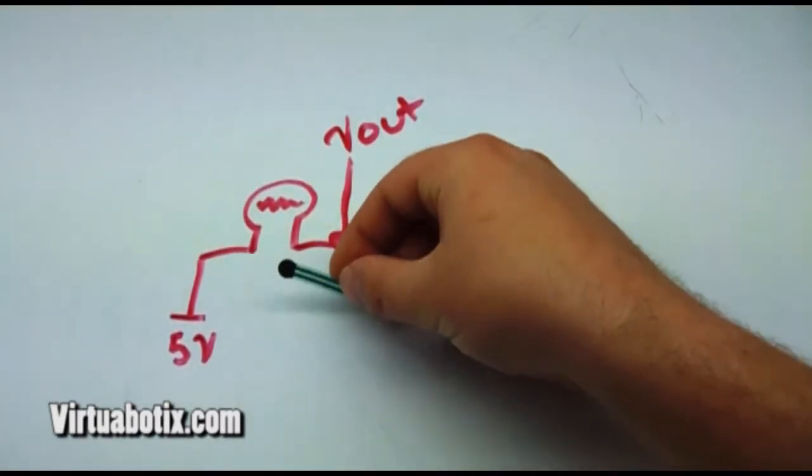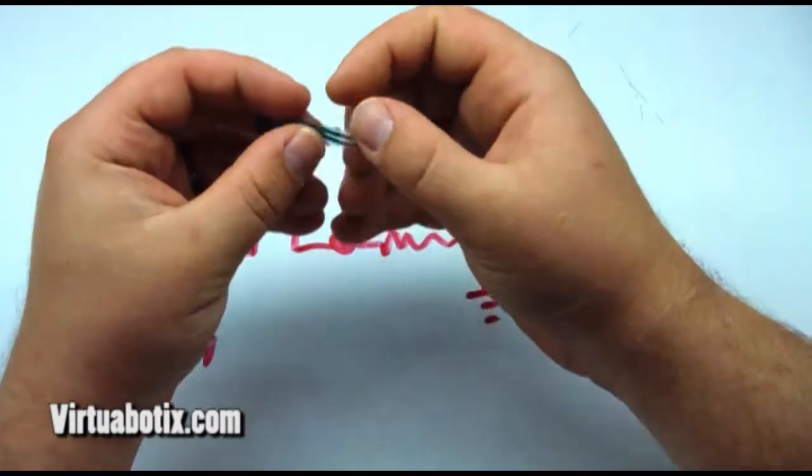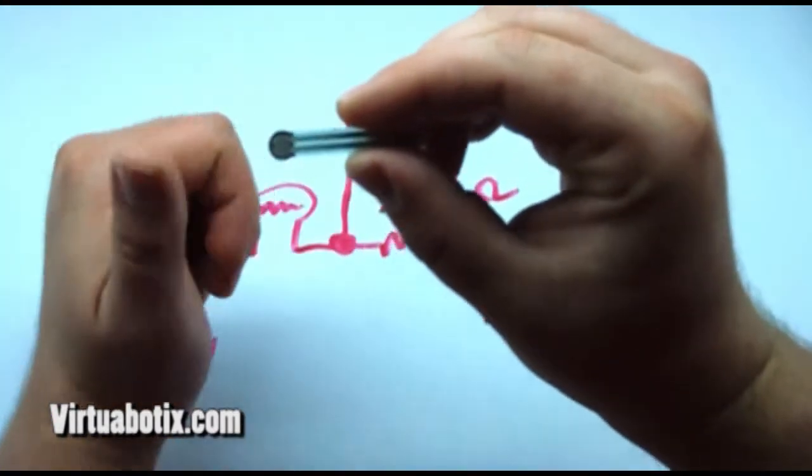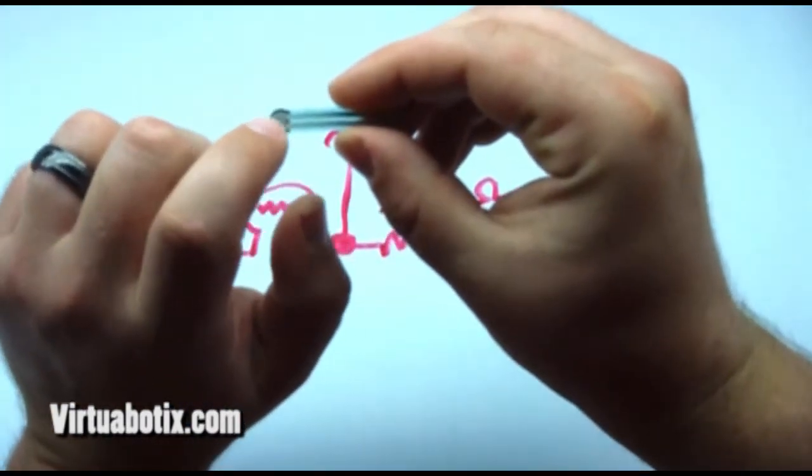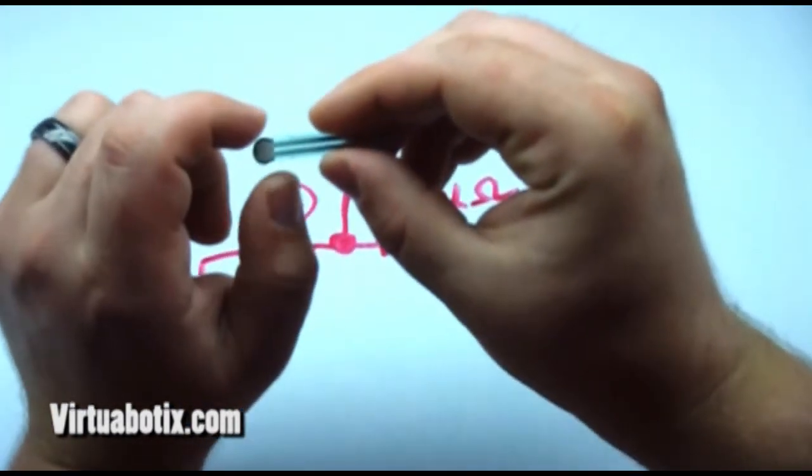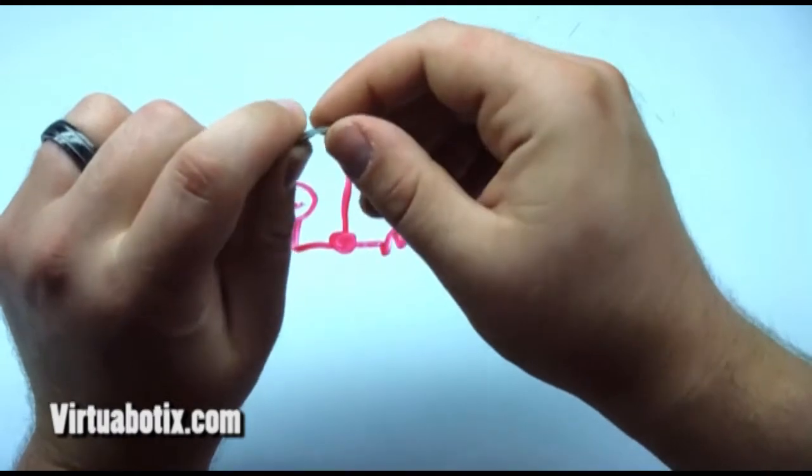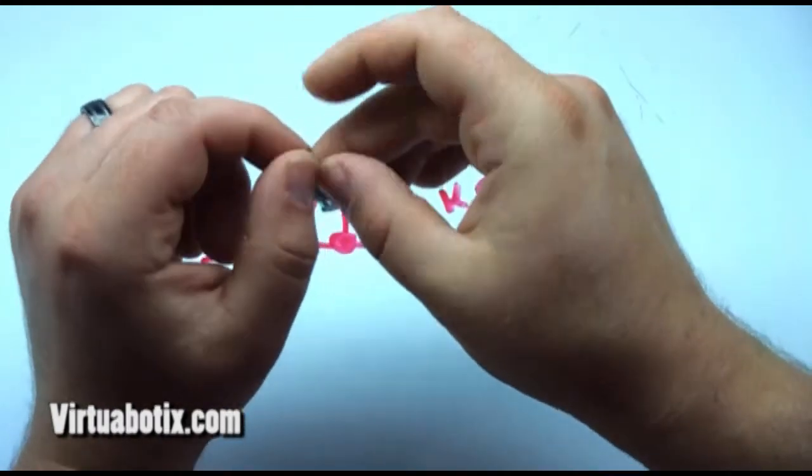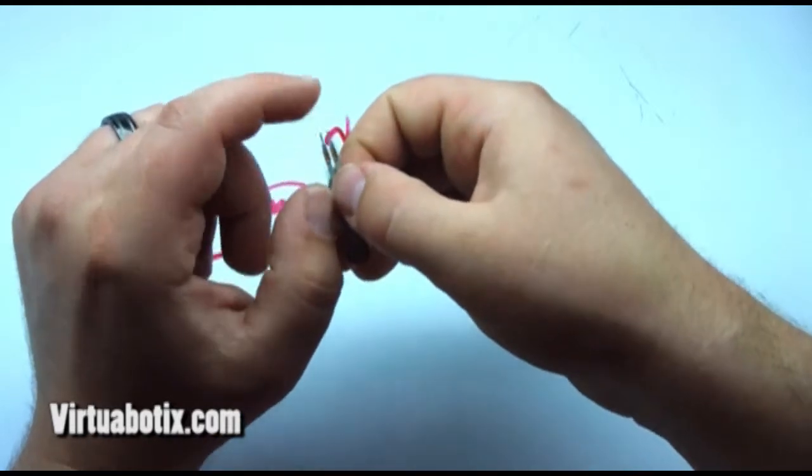This right here is our sensor. So basically what you have is this is the variable resistor component. It's got like 3 layers of material that respond to pressure. And then these are your output pins.